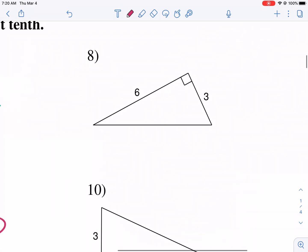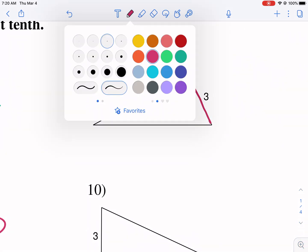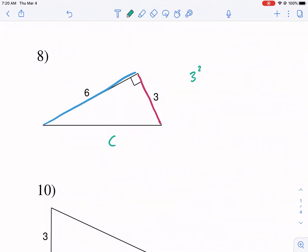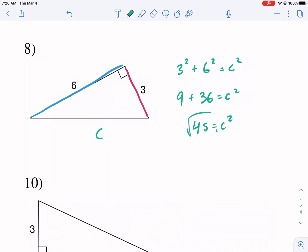All right, moving on to the next one. So again, we have the two legs. Let's go a little bit quicker now. We're looking for the last side, C. So we know that 3 squared plus 6 squared is going to be equal to C squared. So we have, what's this, 9 plus 36 equal to C squared. That's 45 equals C squared.